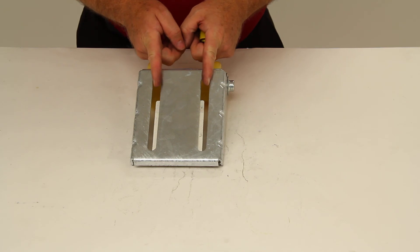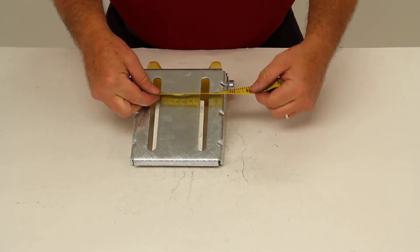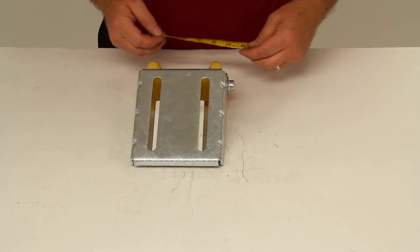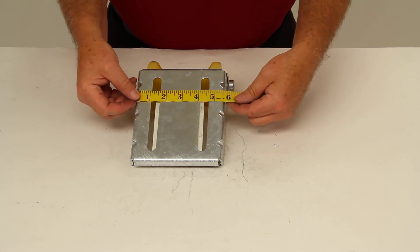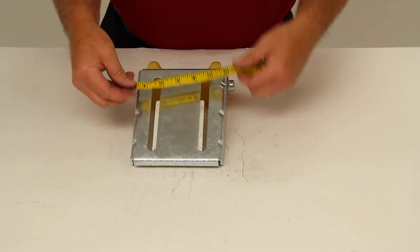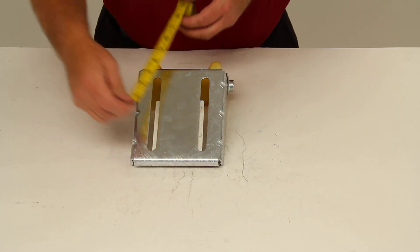The spacing of the mounting slots from center to center is going to be three inches. And the overall size of this bracket is five and a half inches by six and a quarter inches.